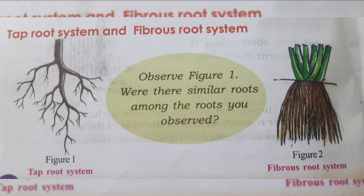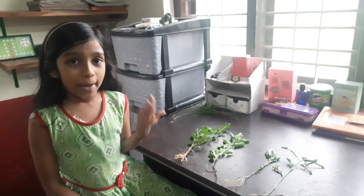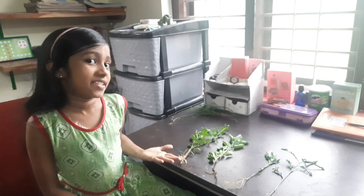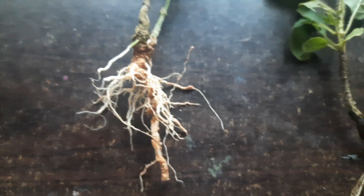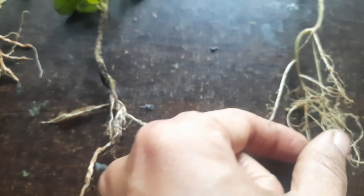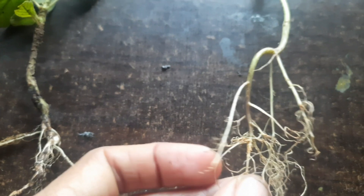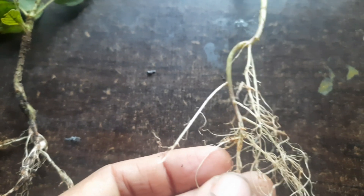Now, let's see some live examples. These are some taproot plants. See the large main root which comes off the stem — it is called taproot. It has a number of side roots also. Observe it carefully.